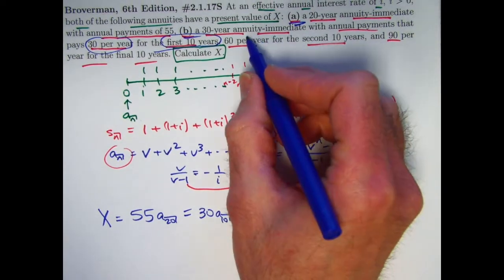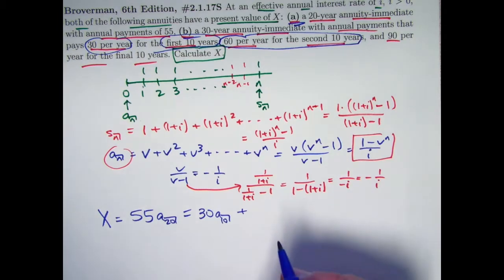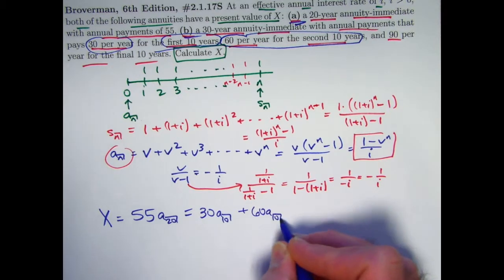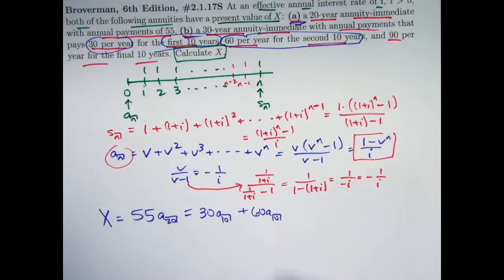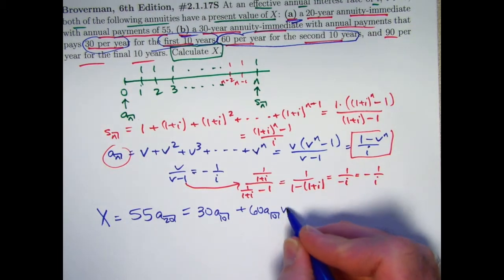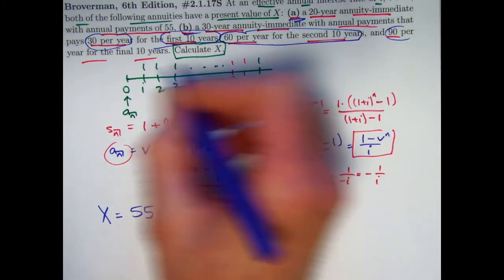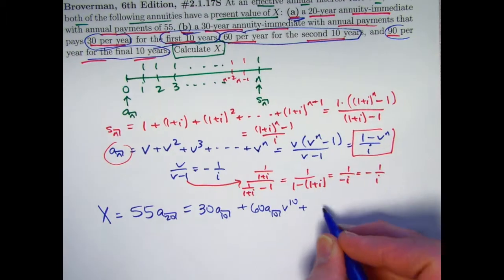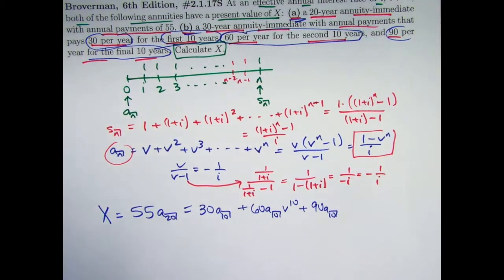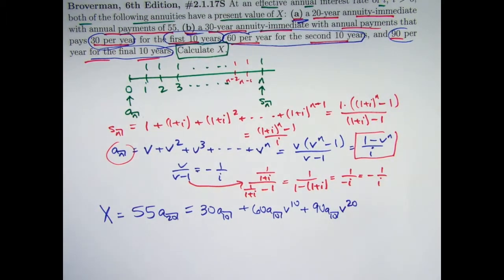It gets trickier from this point. The present value of the second group of payments, 60 per year for the second 10 years. Well, careful. Its present value at time 10 would be 60A_10. But that's at time 10 because those payments start at time 11. I need to discount that back in time another 10 years. I need to multiply by v^10. The last group of 10 payments, 90 per year for the final 10 years. If I wrote 90A_10, that would be its present value at time 20. I've got to pull that back in time another 20 years. I need to multiply that by v^20.